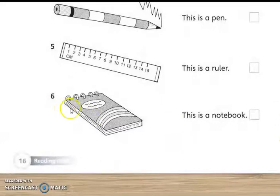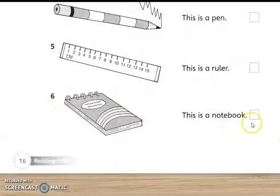Okay, number six. The last one is this is a notebook. Is it right? If right, you tick. If wrong, you just cross.